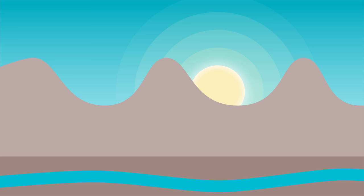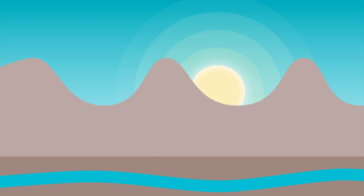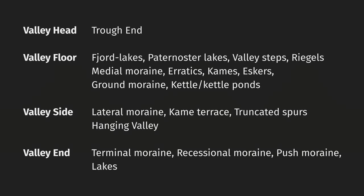The walls of the valley will feature alternating hanging valleys and truncated spurs. Truncated spurs are steep, inverted V-shaped cliffs that form when the interlocking spurs of a pre-glaciated river valley get bulldozed by the valley glacier. Hanging valleys will enter the main trunk U-shaped valley at elevation. If the hanging valley was glaciated, it'll be a U-shaped valley, featuring any and all of the landforms we've discussed so far.